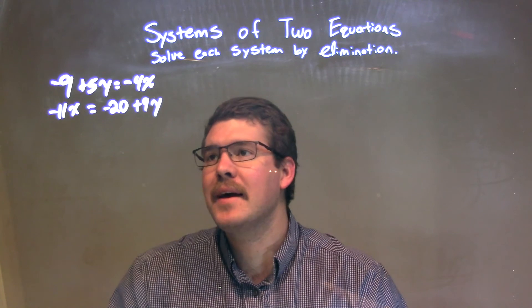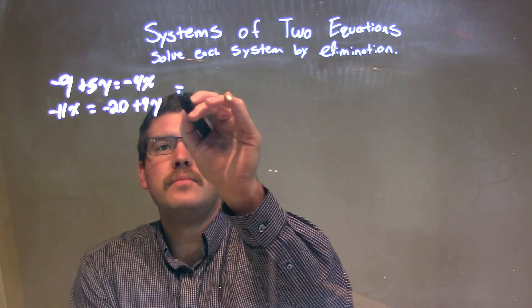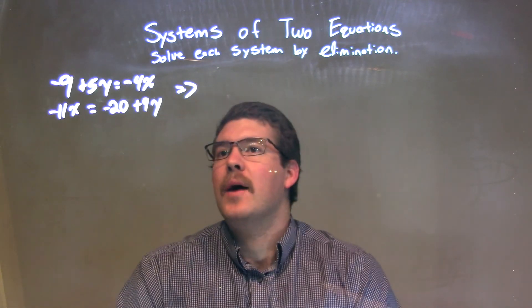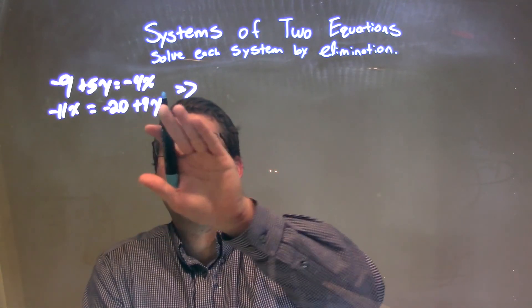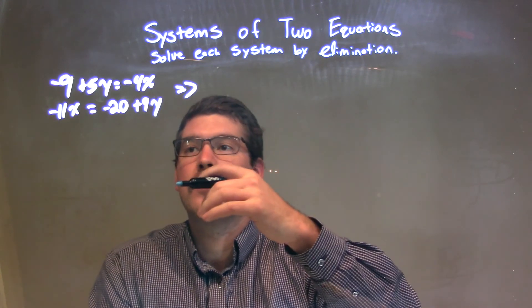Well, the first thing I want to do is I'm going to get all my numbers to one side and all my variables to the other. Let's bring all the variables to the left, the straight numbers to the right.